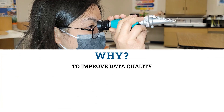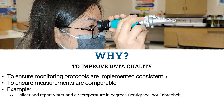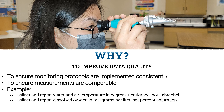Why do field audit sessions take place? Field audit sessions are conducted to ensure monitoring protocols are implemented consistently by all citizen scientists around the state and to ensure measurements are comparable. For example, all citizen scientists must collect and report water and air temperature in degrees centigrade, not Fahrenheit, and dissolved oxygen in milligrams per liter, not percent saturation. It is also important to collect measurements using comparable methods and equipment for accuracy and precision. The ultimate goal is to improve data quality.